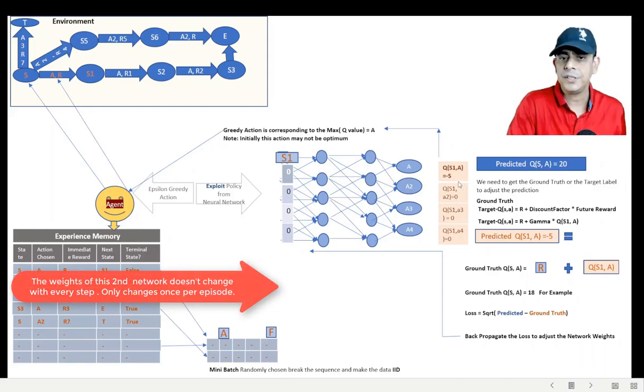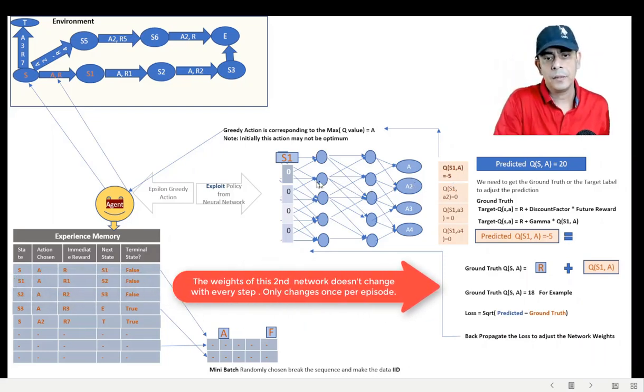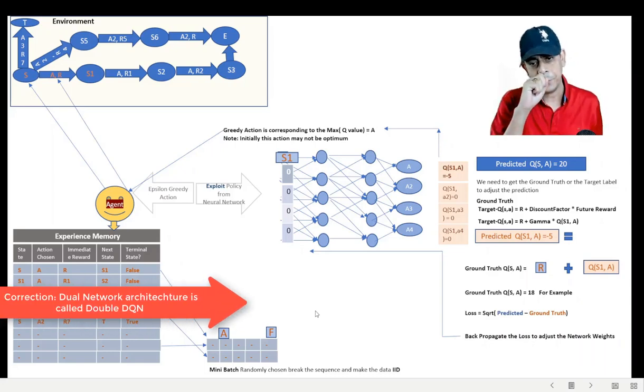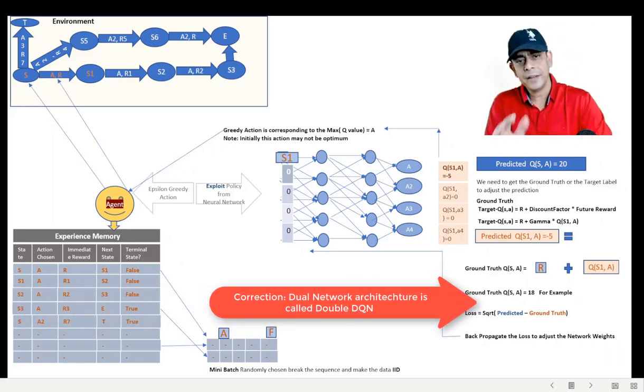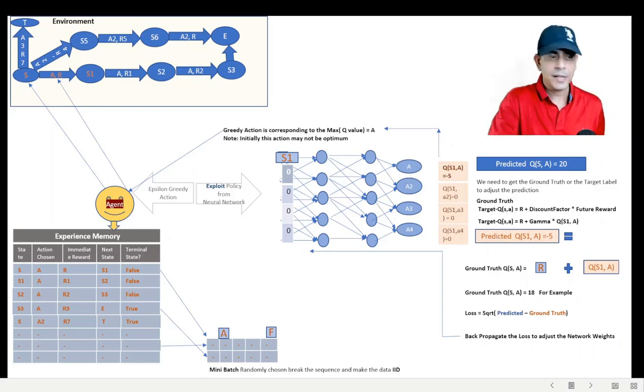Whereas the main network which is used for Q(S,A) will go through the changes as we have discussed. So this model of having a dual network - one used for predicting Q(S,A), another used for generating the target value - is what is called DQN. And that ends our session here. Hopefully this visualization will help you to remember the training process for a longer time, and I will see you in the next video.